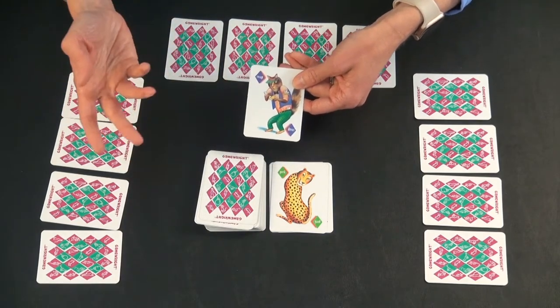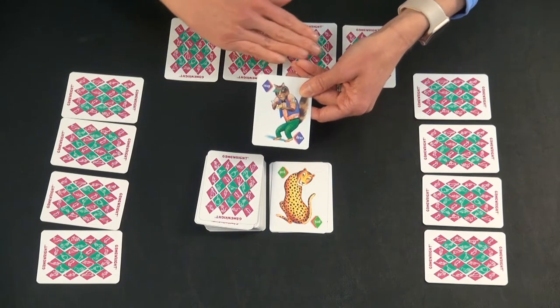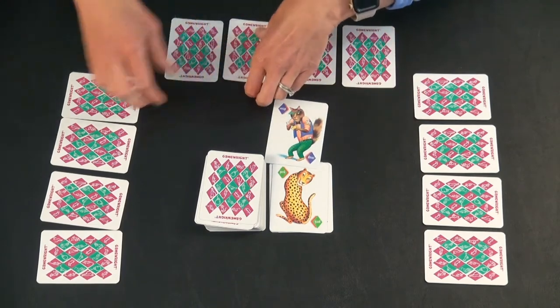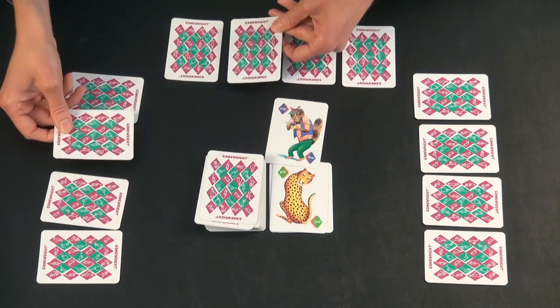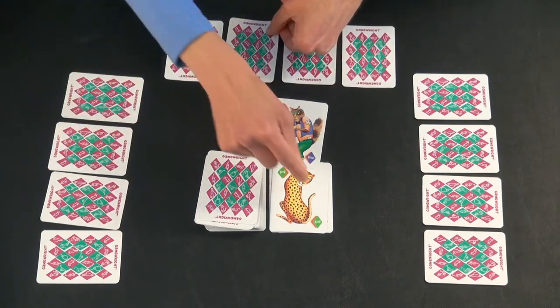And they draw a swap card. They are going to pick a card, and they cannot look at it, and they're going to trade it with somebody else's card, and they cannot look at that.